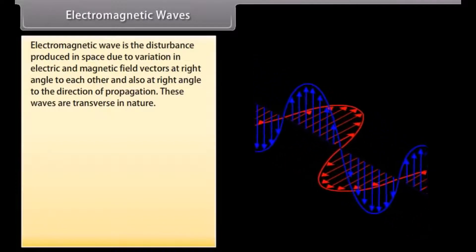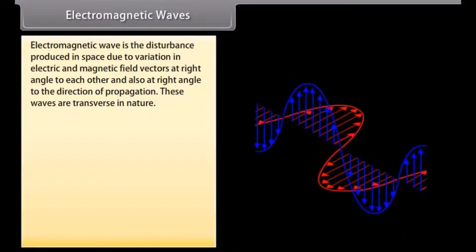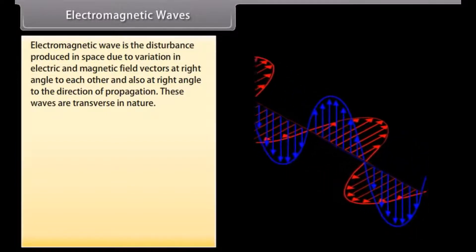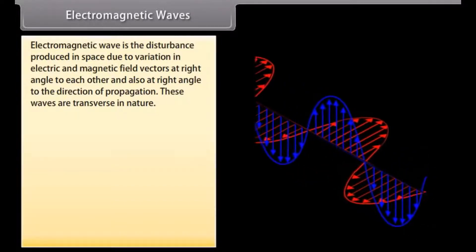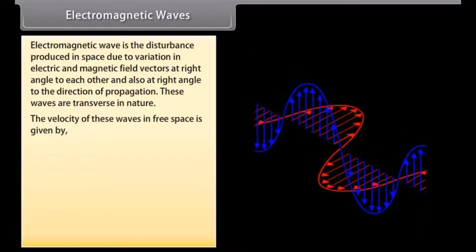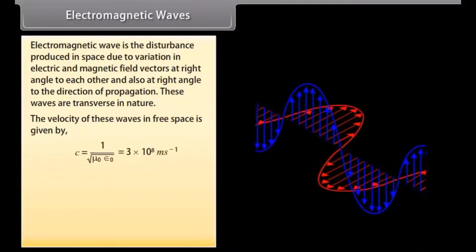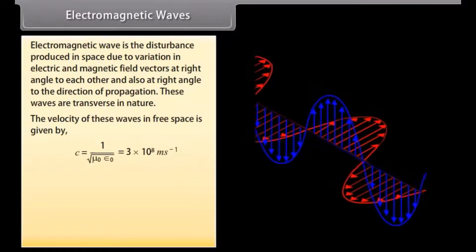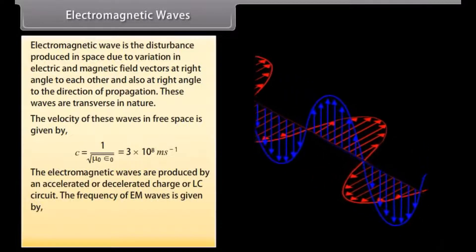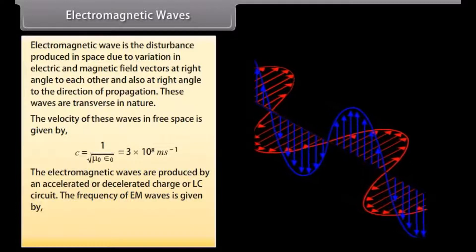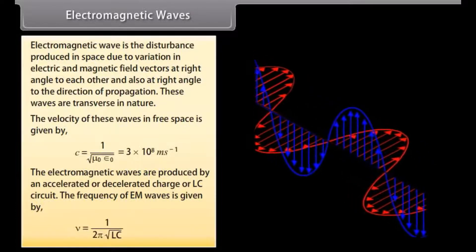An electromagnetic wave is the disturbance produced in space due to variation in electric and magnetic field vectors at right angles to each other and also at right angles to the direction of propagation. These waves are transverse in nature. The velocity of these waves in free space equals the velocity of light, which is 3 × 10^8 meters per second. Electromagnetic waves are produced by an accelerated or decelerated charge or LC circuit. The frequency of EM waves is given by 1 upon 2pi times the square root of LC.